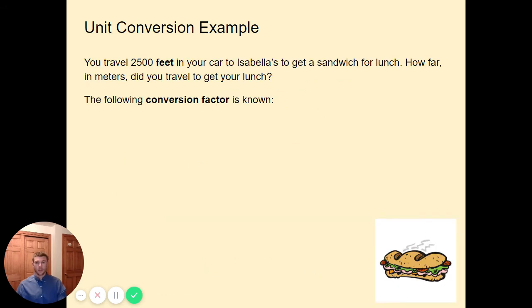So let's do an example here. Let's say you travel 2,500 feet in your car to Isabella's to get a sandwich for lunch. How far in meters did you travel to get your lunch? So let's start the same way we started the last one with a goal in mind. We're starting with feet. That's the given. We're given feet, but we want to get to meters. It's important to remember that we're going to need to get to meters. So let's start with our fraction. We have 2,500 feet over 1.